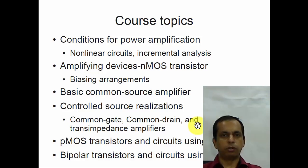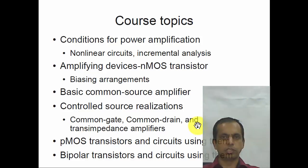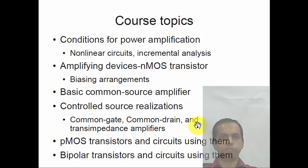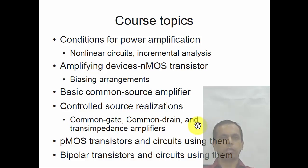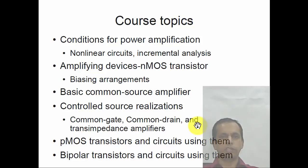Then we will come to the most basic form of amplifier, known as the common source amplifier, and then look at other controlled sources. In order to realize these, we have to use negative feedback, so we will also touch upon the principles of negative feedback. Then we go to another variety of MOS transistor known as the PMOS transistor and make circuits using it. We will also look at another technology known as bipolar technology, with transistors known as bipolar transistors, seeing how to make circuits with them and understanding key differences between bipolar and MOS transistors.